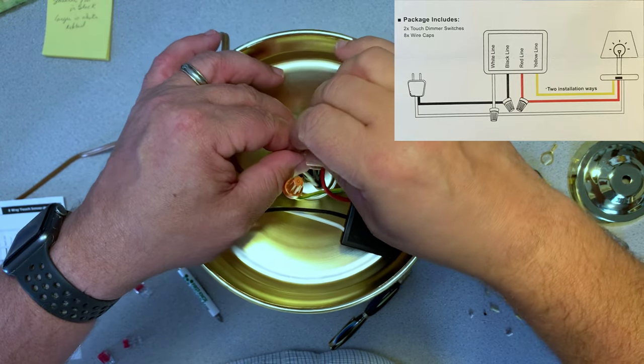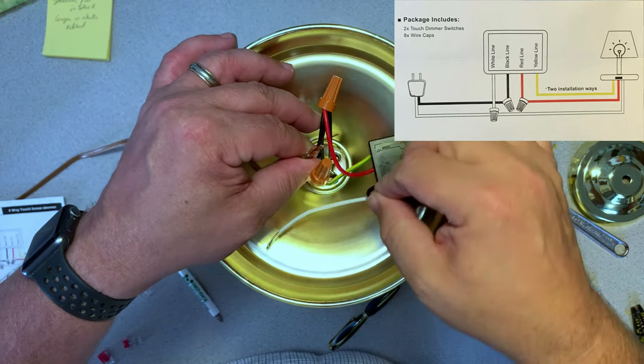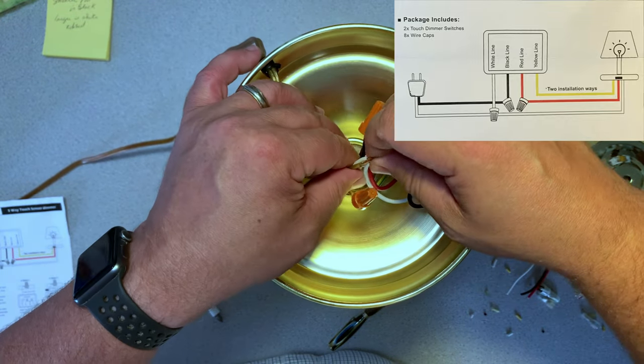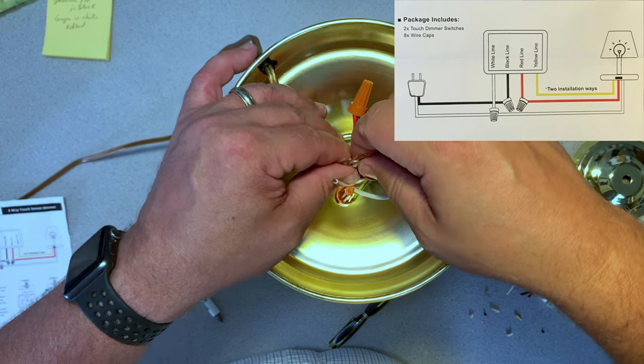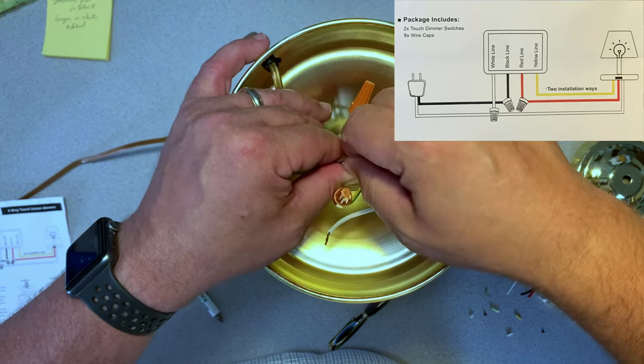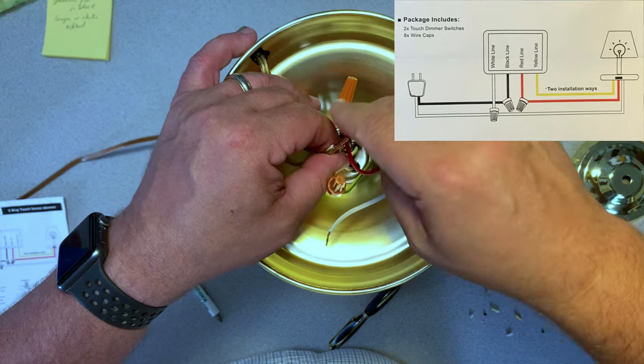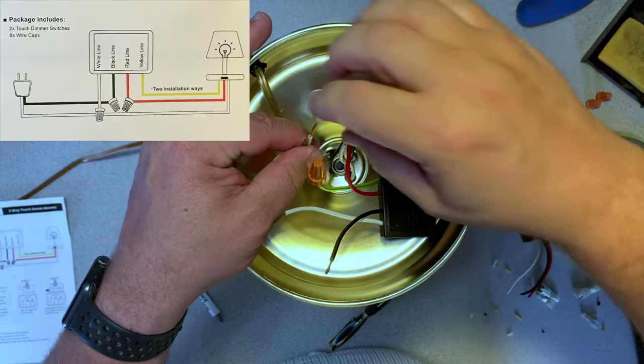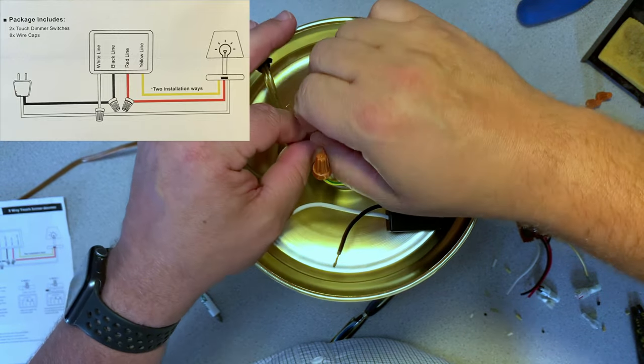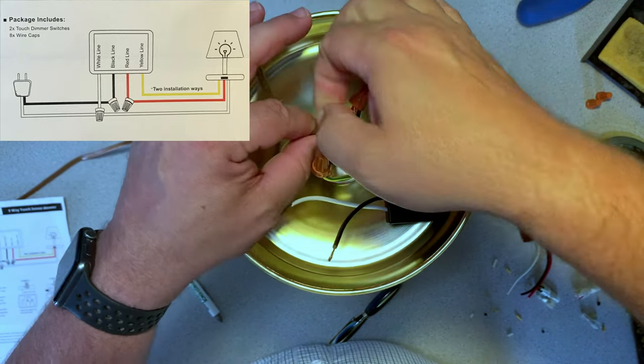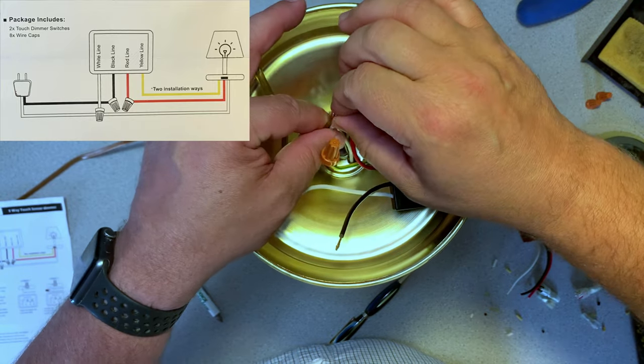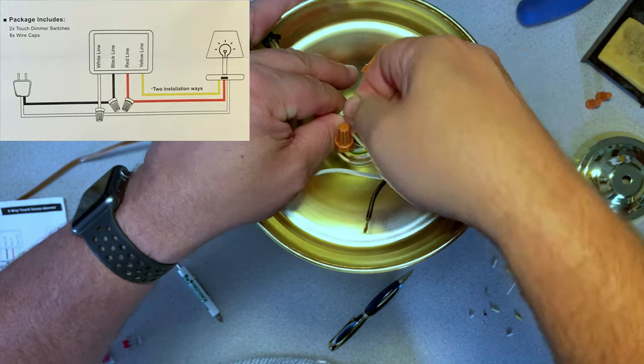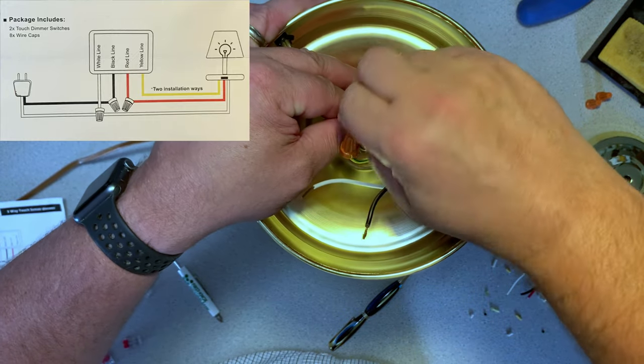If we didn't have the module, it would go straight from the black wire all the way through and it wouldn't have any issues. So I'm making sure that there's a good physical connection. So I'm twisting all of the wires together first and then I'm applying the nut on top of it. If you don't have a good physical connection first, there's a chance that things could pull apart.